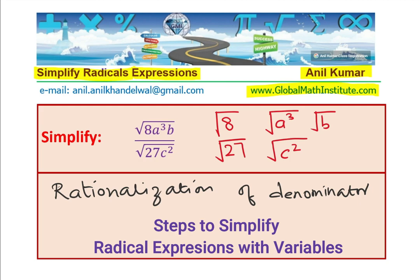So, the example which I have taken has all these components. So, if you watch this video carefully, you can actually understand the complete chapter of how do we simplify radical expressions. Does that make sense to you?